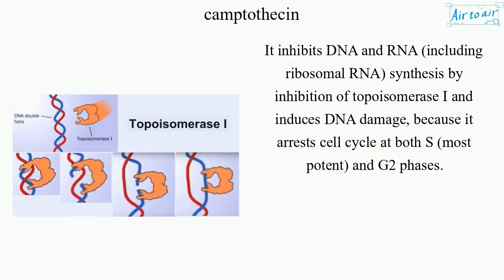It inhibits DNA and RNA, including ribosomal RNA, synthesis by inhibition of topoisomerase I and induces DNA damage, because it arrests the cell cycle at both S (most potent) and G2 phases.